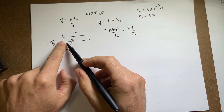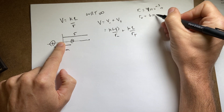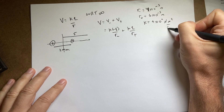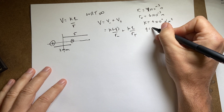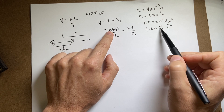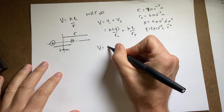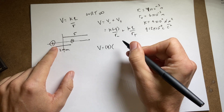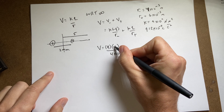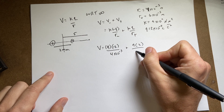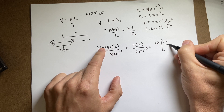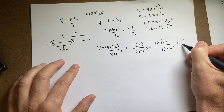Wait — correcting those distances: that's 1 millimeter and 5 millimeters, so R_minus is 4 times 10 to the negative 3 meters. K is 9 times 10 to the ninth, and Q is 2 times 10 to the negative ninth coulombs. Since the nano and the 10 to the ninth cancel, we get: V equals 18 times negative 1 over 4 times 10 to the negative 3, plus 1 over 6 times 10 to the negative 3.